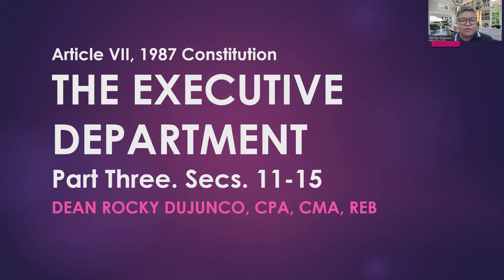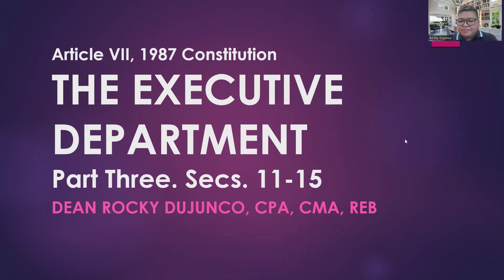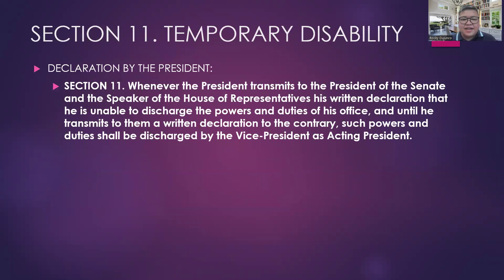For this Part 3, as we go through the sections, the important things to remember from the previous lectures are the difference between term and tenure, and also the difference between an elected president and an acting president. This afternoon, we will lecture about Sections 11 to 15. For Section 11, this discusses the temporary disability of the President.